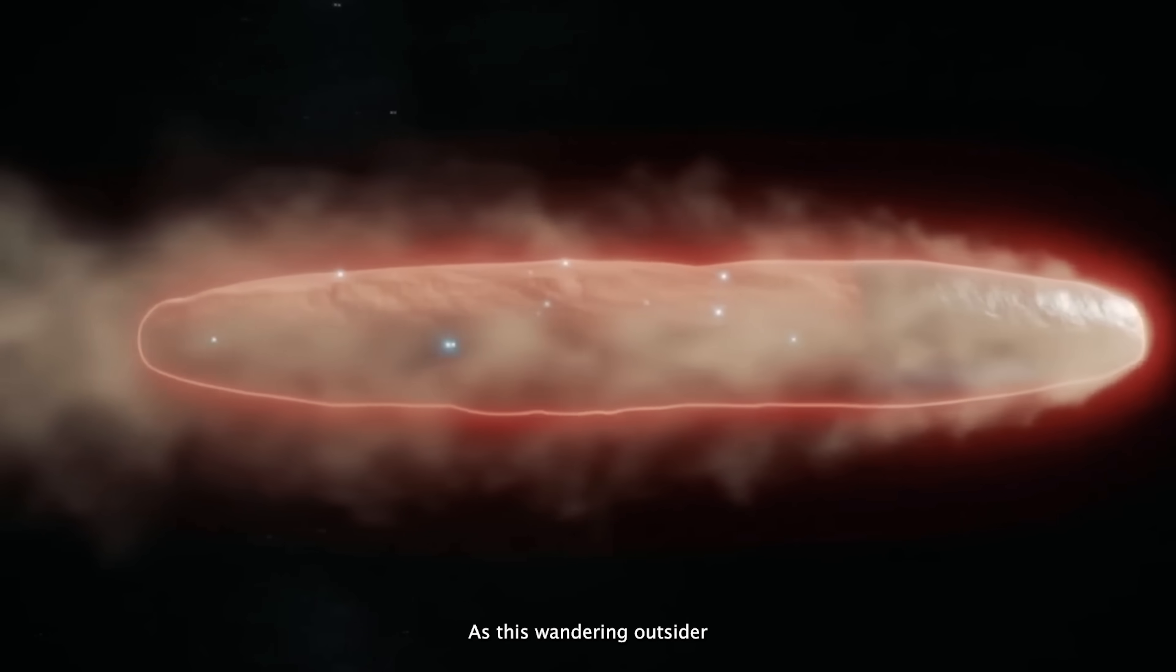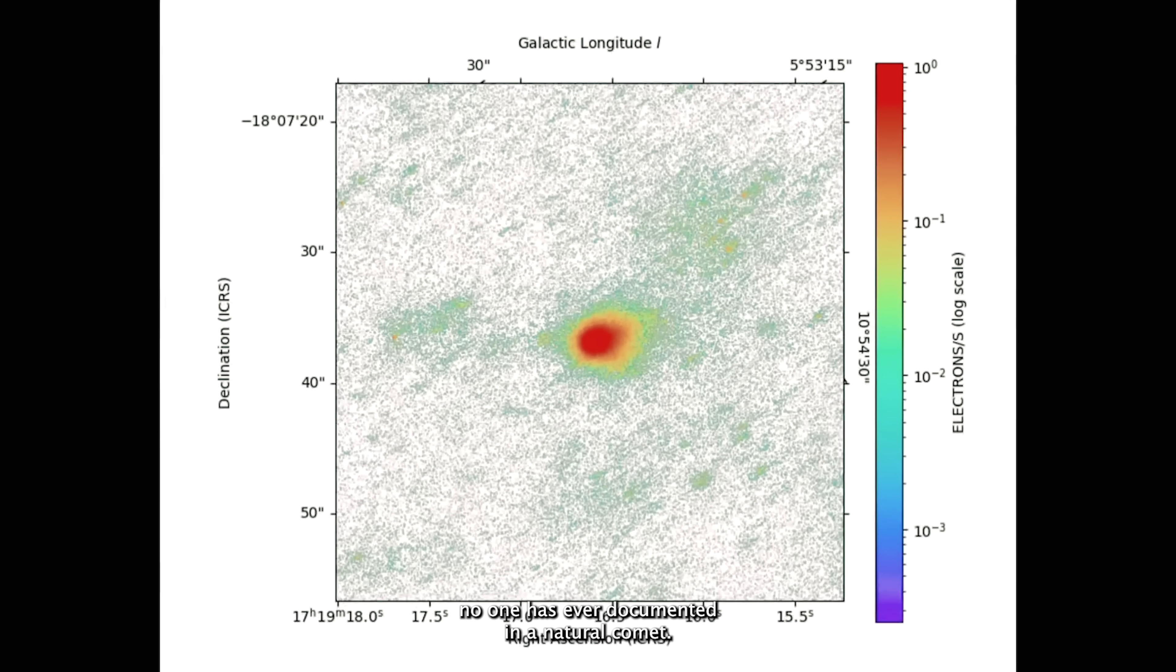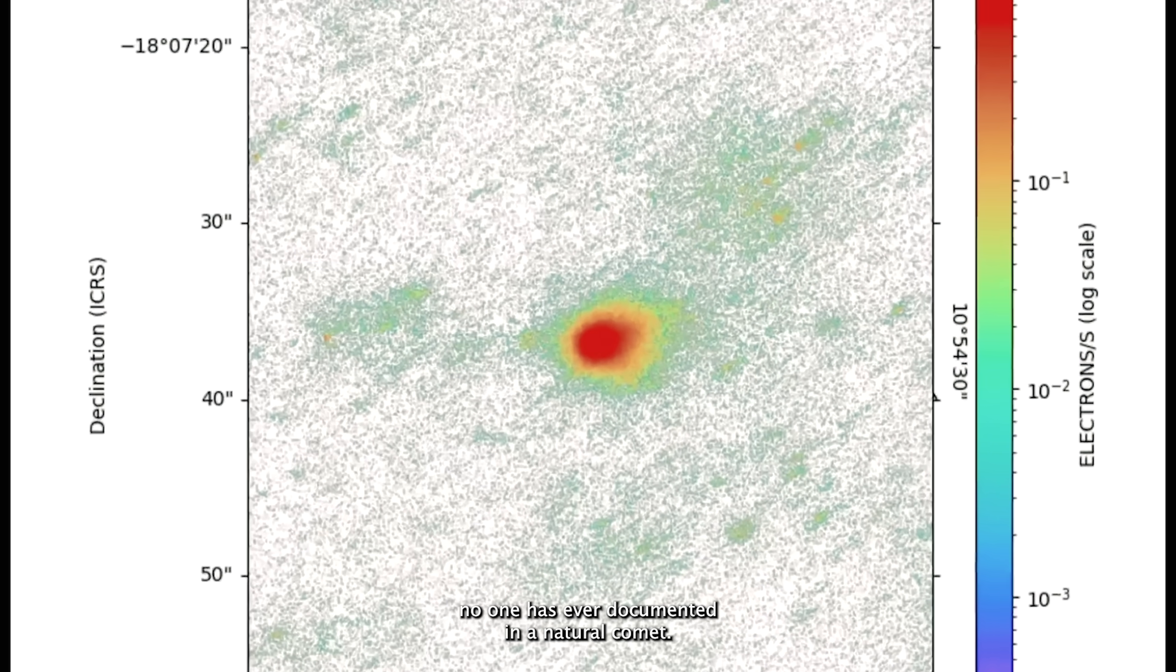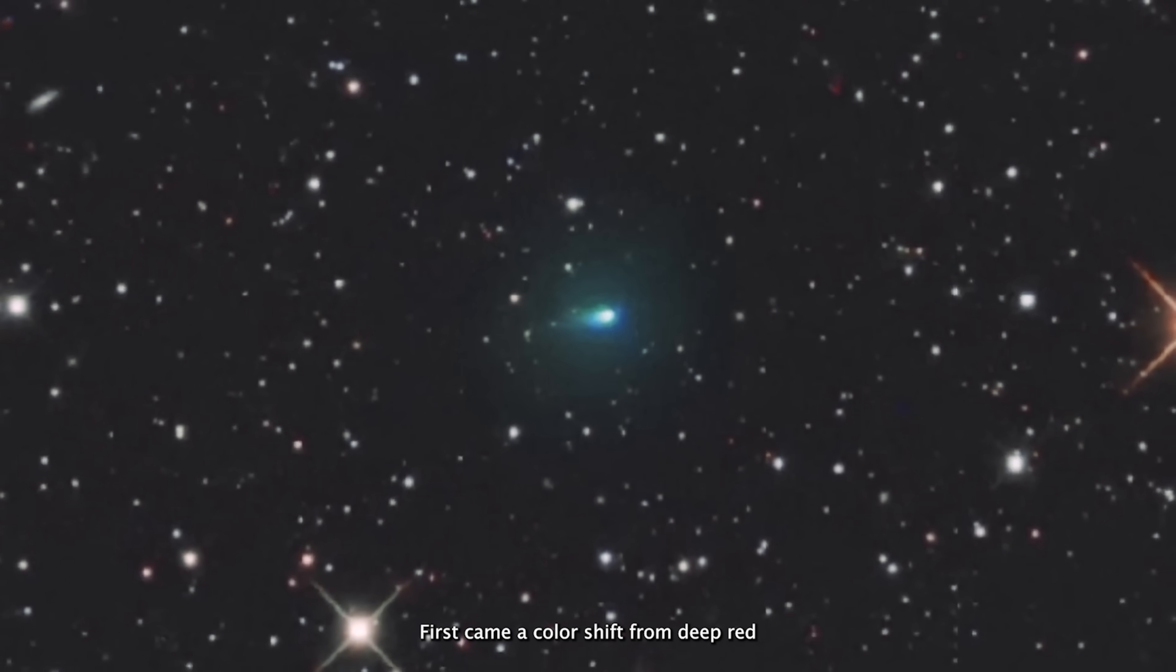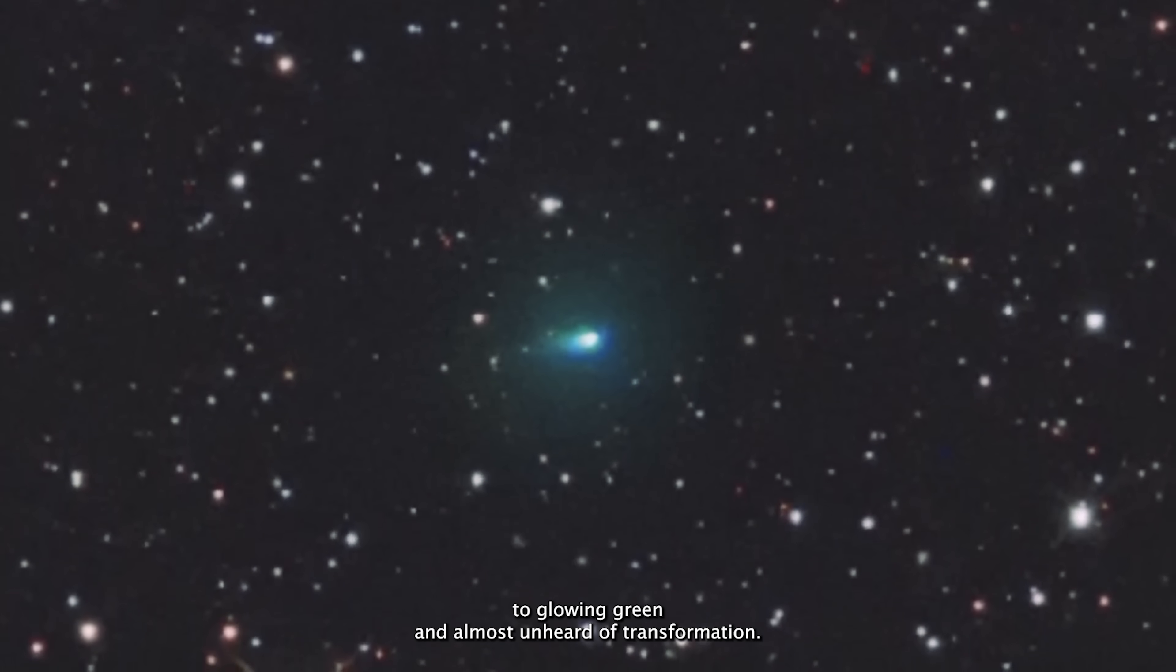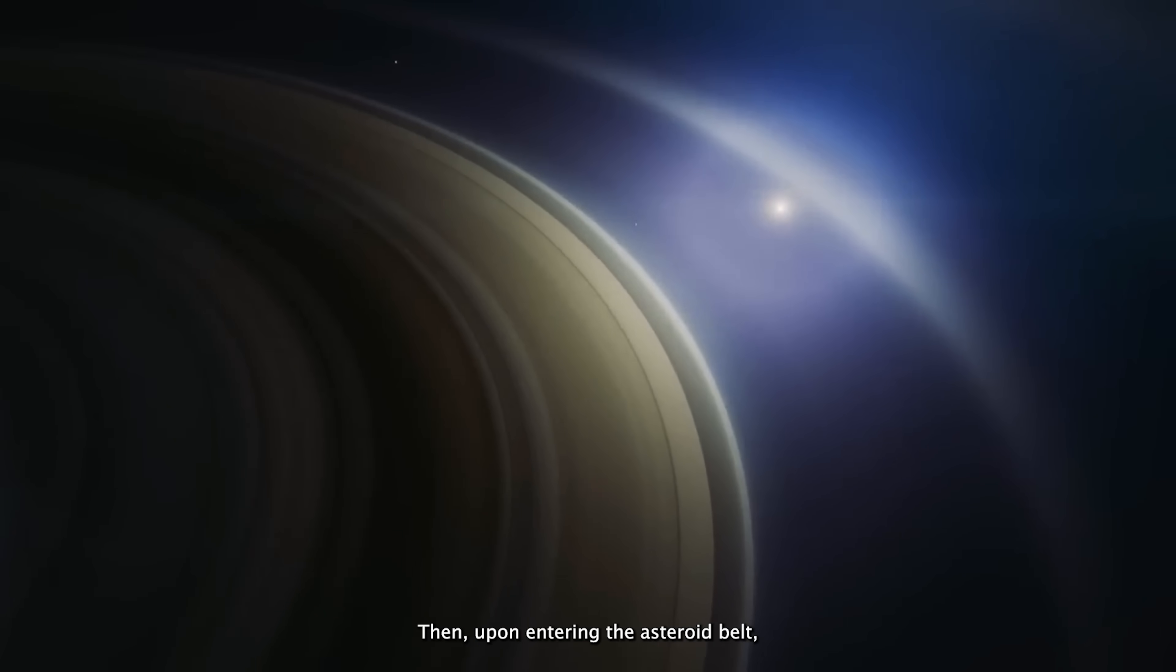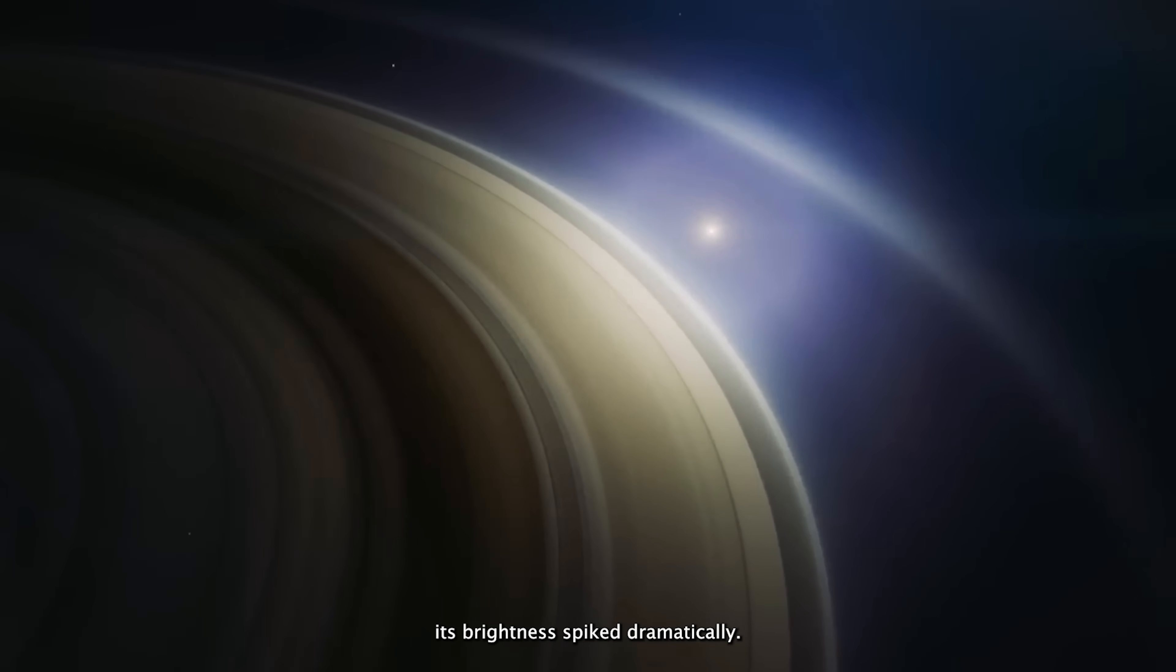As this wandering outsider drifted closer to Mars, it began acting in ways no one has ever documented in a natural comet. First came a color shift from deep red to glowing green, an almost unheard of transformation. Then, upon entering the asteroid belt, its brightness spiked dramatically.